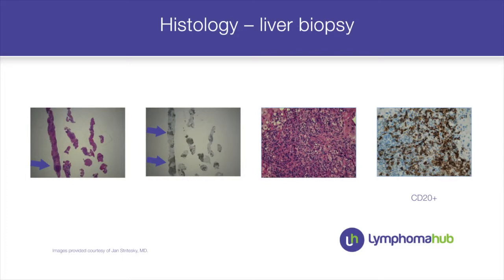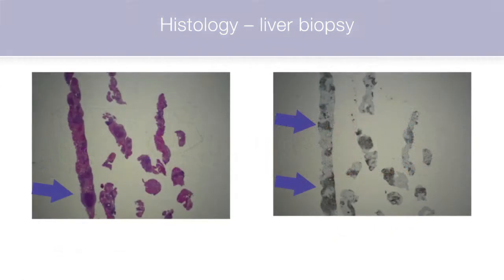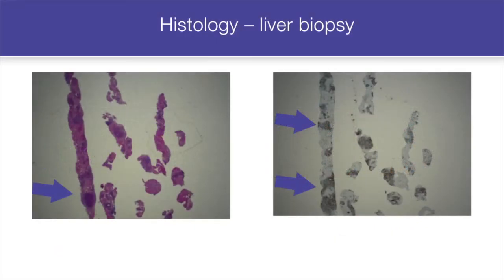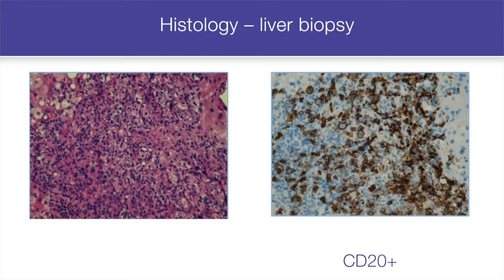Moreover, he developed disseminated intravascular coagulation, so the patient was in very serious condition. We knew there was a mass in the retroperitoneum but had no diagnosis. Because of suspicion that the liver was also involved, we performed a transjugular biopsy, which showed infiltration of the liver by lymphocytes, and the diagnosis of diffuse large B cell lymphoma was made — with CD20 positivity confirmed.